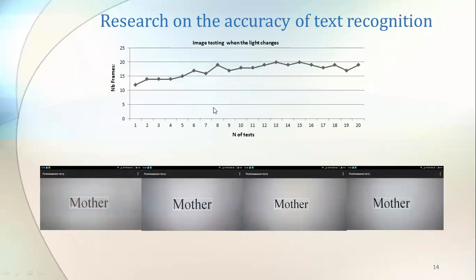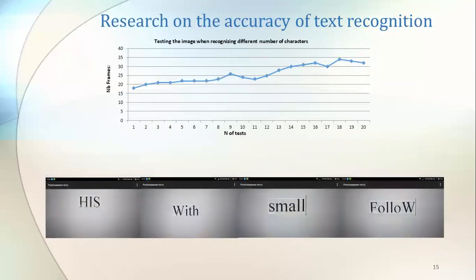Here you can see figures on research into the accuracy of text recognition. The first figure shows image testing when brightness changes, with number of frames as the legend element, and examples of text recognition when lighting changes. The second set of results presents testing when the number of characters changes, with series of frames as legend elements, and examples of text recognition when the number of characters is varied.